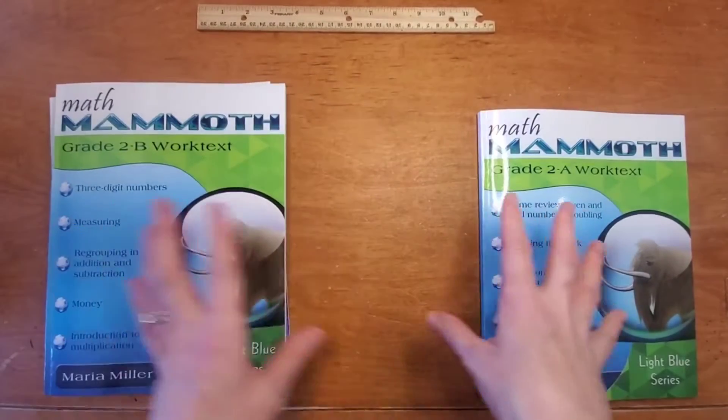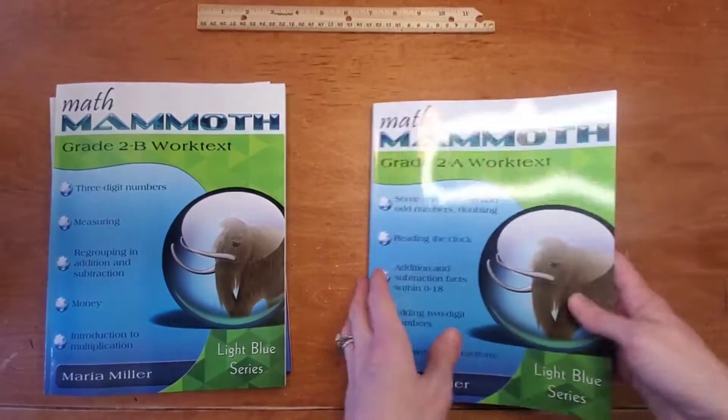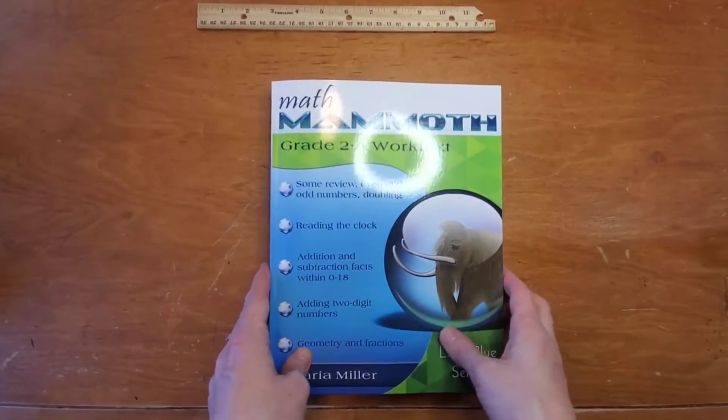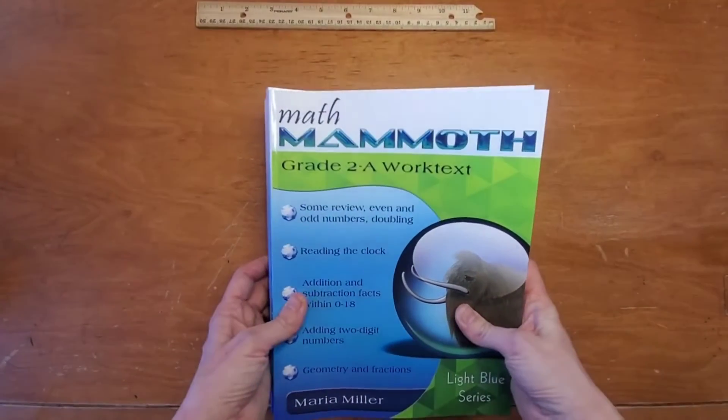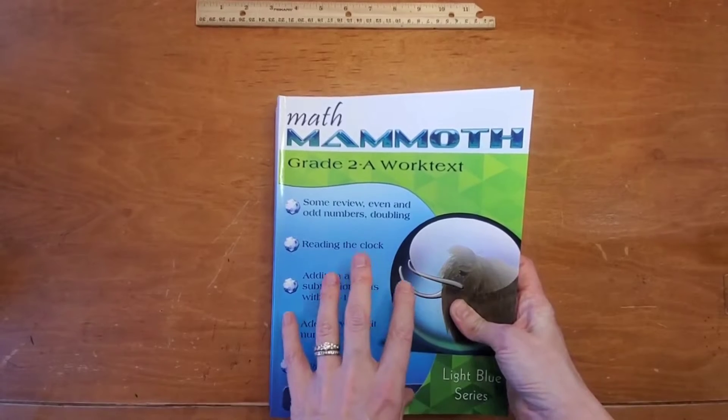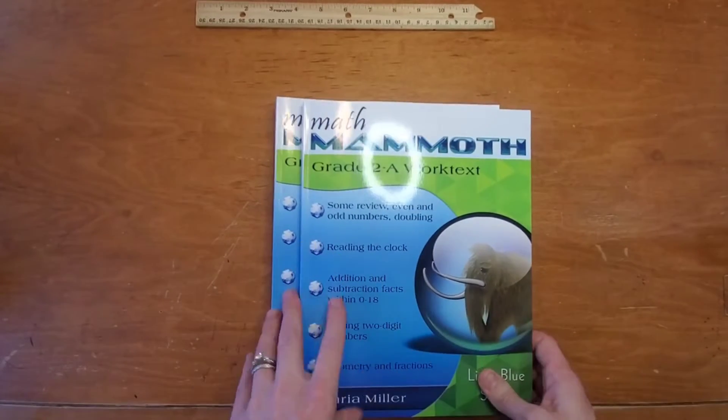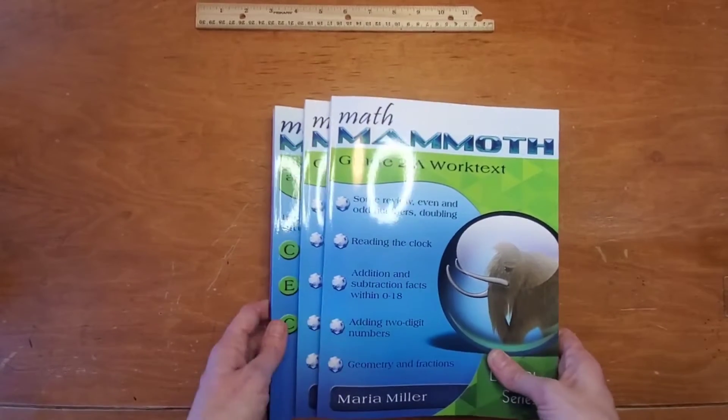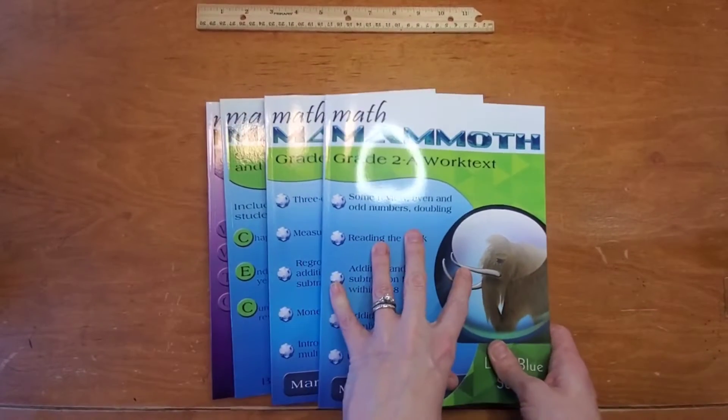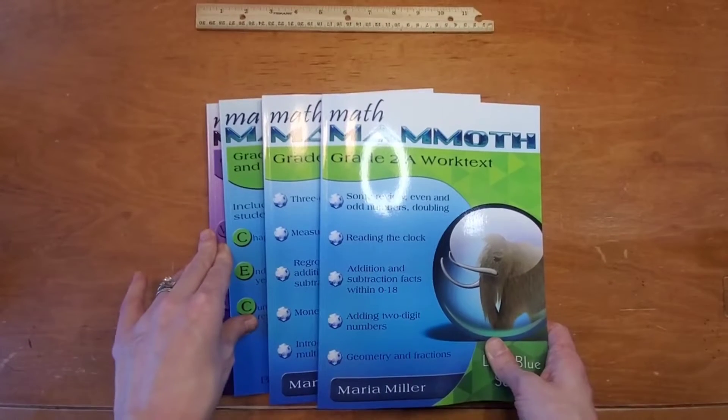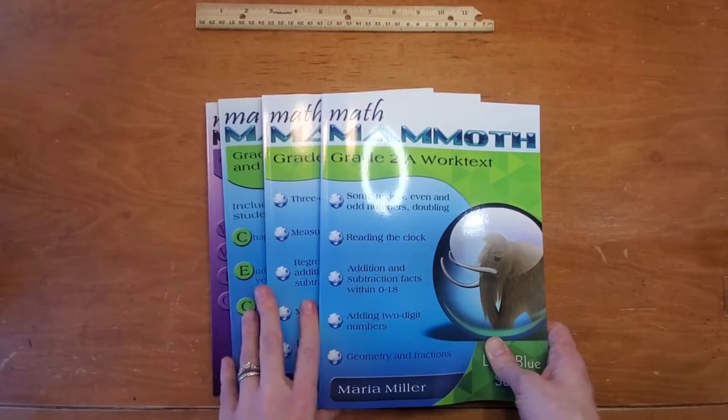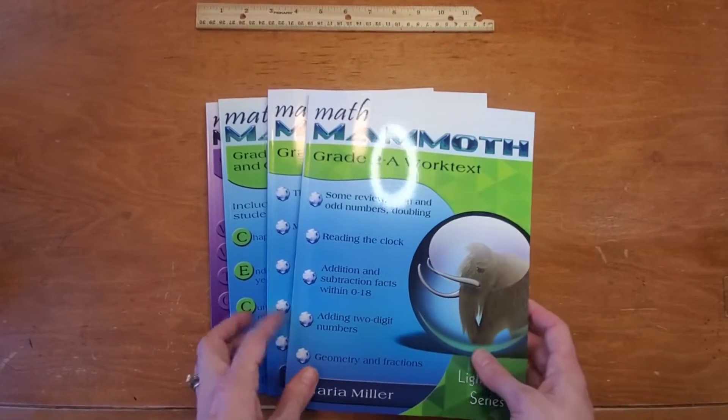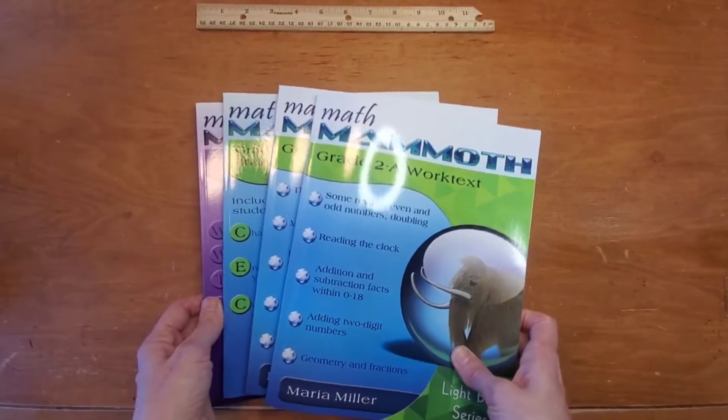Worktext is that the learning and the work is all in the same book, so there's no teacher's manual, which is really nice. The books go for about $21 per book as a PDF on the Math Mammoth website. But you can also get these printed versions on Rainbow Resource or other places online. The worktexts are about $13 a book, and the other ones are less than that, or $40 for the set. And it's a couple dollars more if you're getting it in the color, which I really liked. I thought that added a little bit to it.